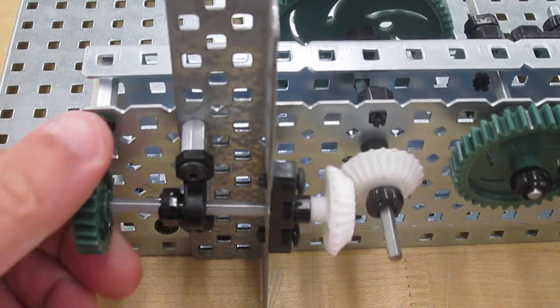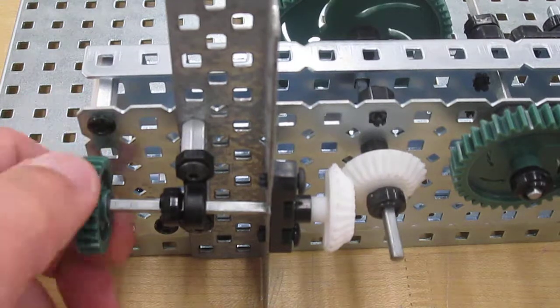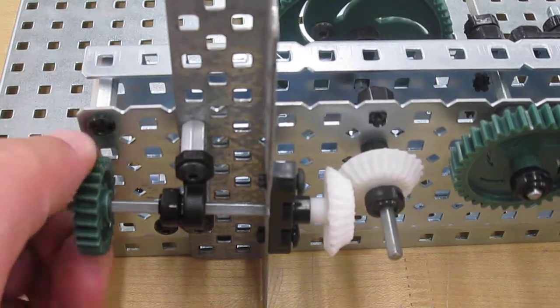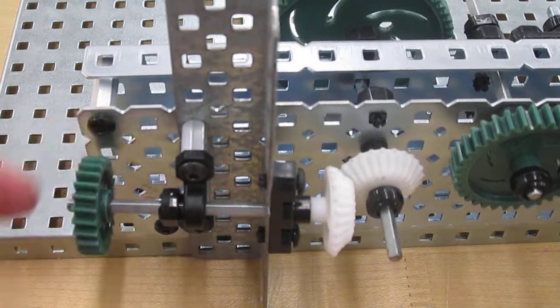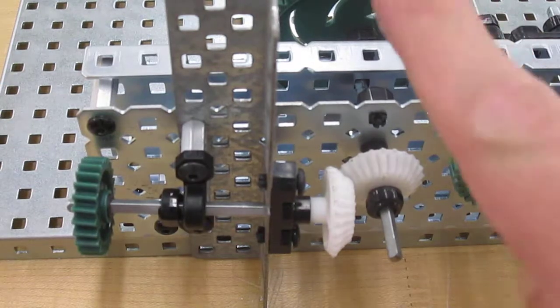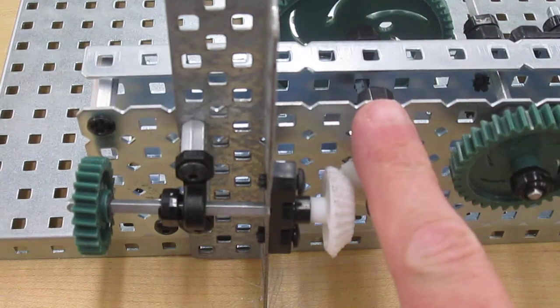Now there's other bevel gears that will make other angles but the ones that we have are for a 90 degree turn like we see here because we have one drive shaft going this way and we have another going this direction.